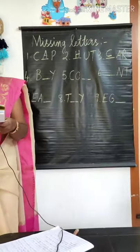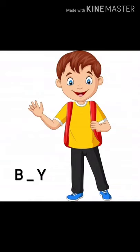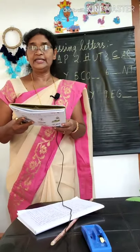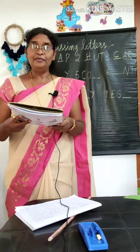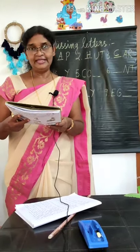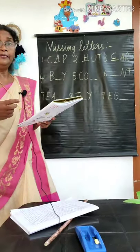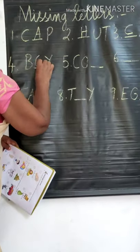Fourth one is BOY. B, O, dash — which is the missing letter? O is the missing letter. Write capital letter O.